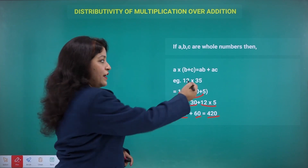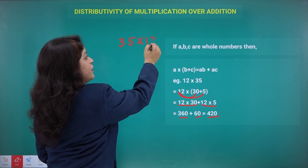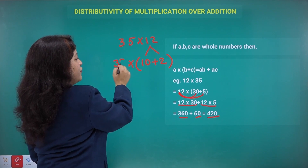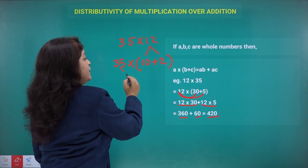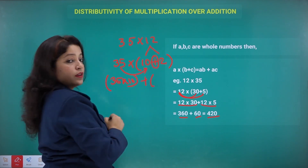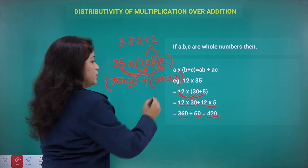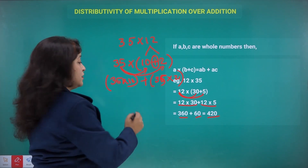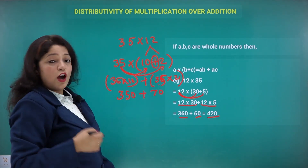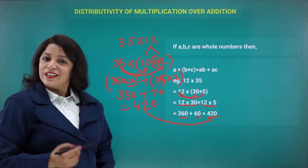You may also split 12 instead of 35. If I split 12 as 10 plus 2, then 35 times (10 + 2) gives 35 times 10 plus 35 times 2. That's 350 plus 70, and again you get the same result: 420. So in whatever manner we split, we get the same answer.